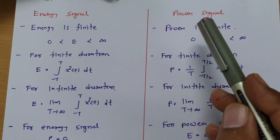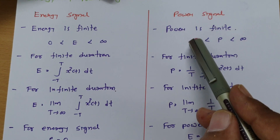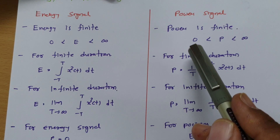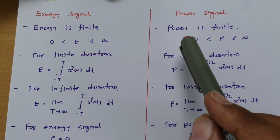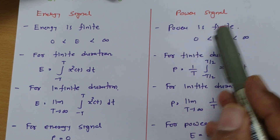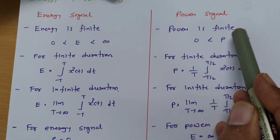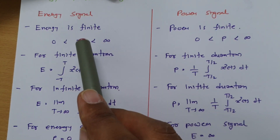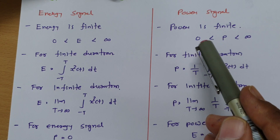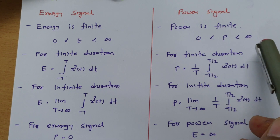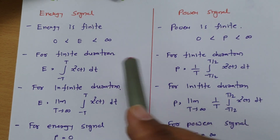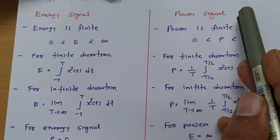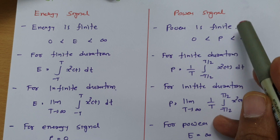And if you calculate the power of a given signal and it is finite and non-zero, in that case we can say that signal is a power signal, because it has a finite amount of power. So for an energy signal, energy is between zero and infinity, and for a power signal, power is between zero and infinity. A finite energy signal is an energy signal, and a finite power signal is a power signal.